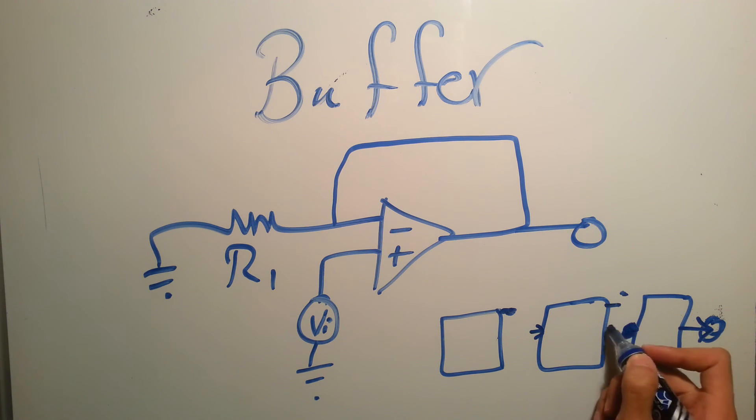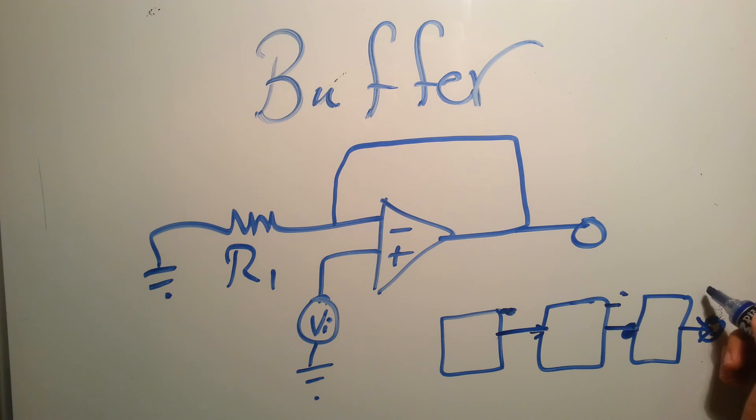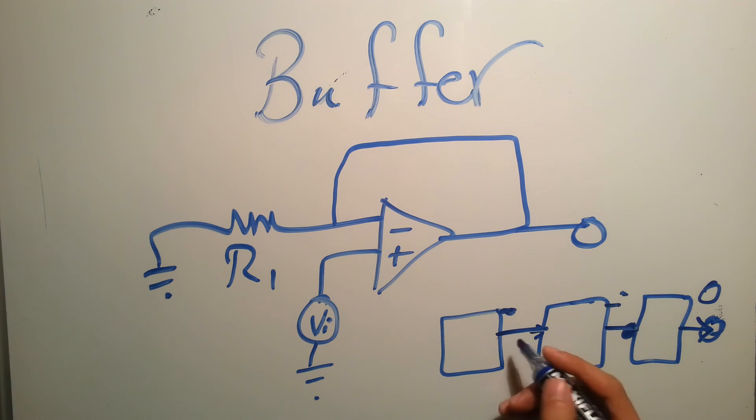This is where the buffer is used. You connect between them using a buffer because a buffer will take the voltage and cancel the loading effect of the other circuits around this system, and your system will work fine. You'll have your output. So buffers are very important for electronics.